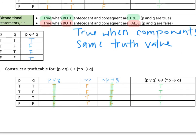Take a look at your truth table and compare it to mine. Looking at this last column, I got all trues. Double check that. When our truth table is all true for every statement, we have ourselves a tautology.